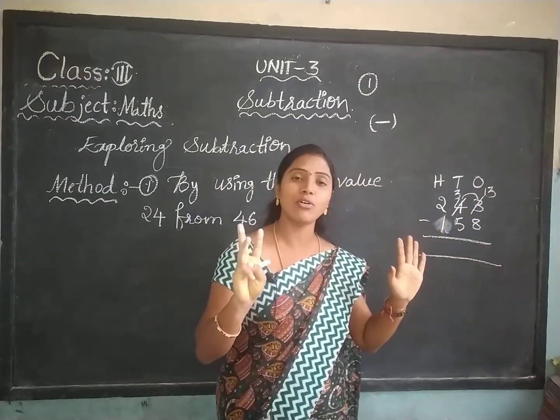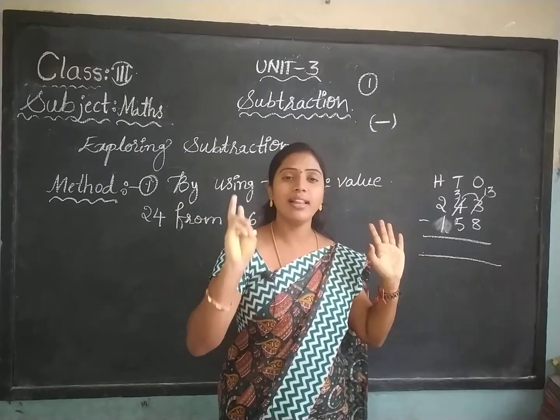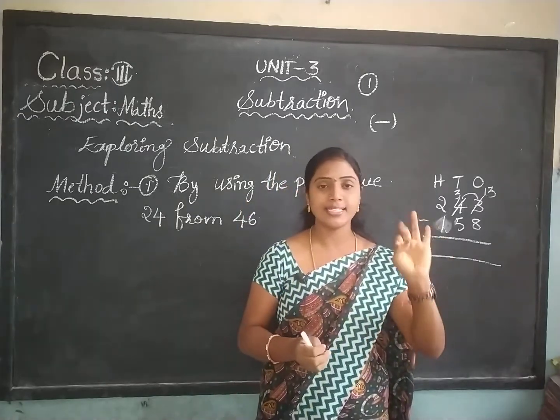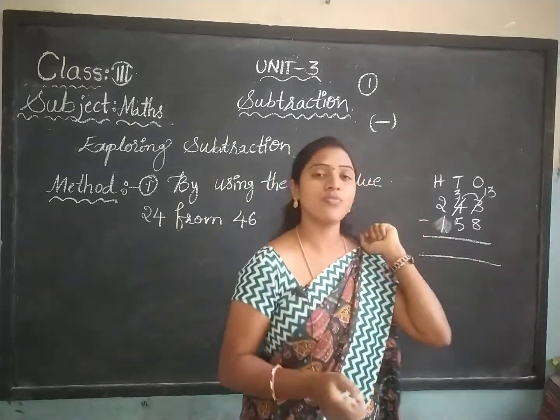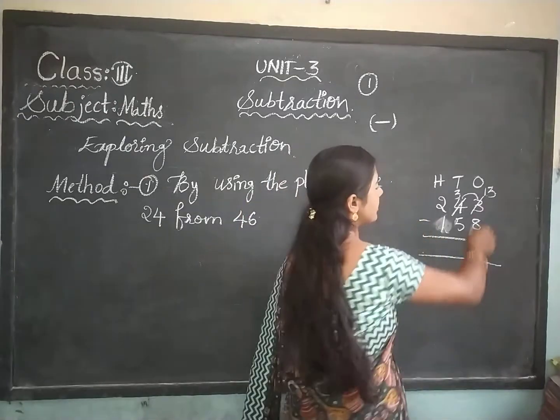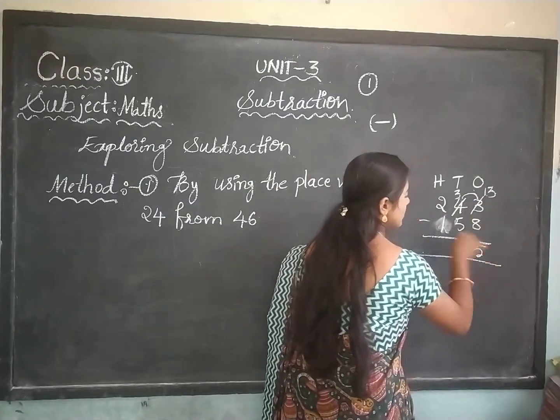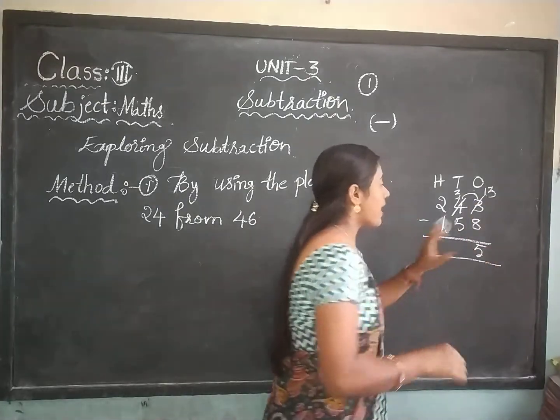So for 13 minus 8, you should count 8 numbers before 13: 12, 11, 10, 9, 8, 7, 6, 5. So 13 minus 8 is equal to 5. Write down 5 in the ones column.